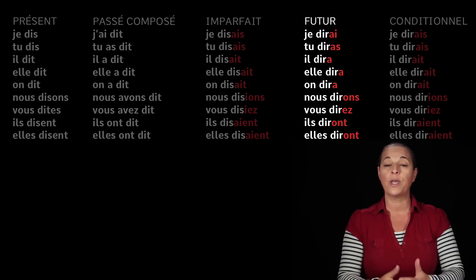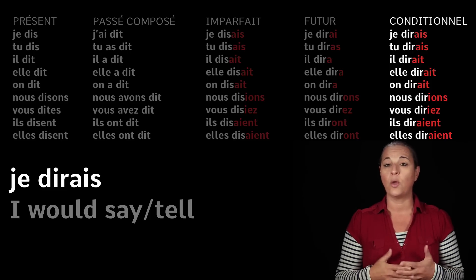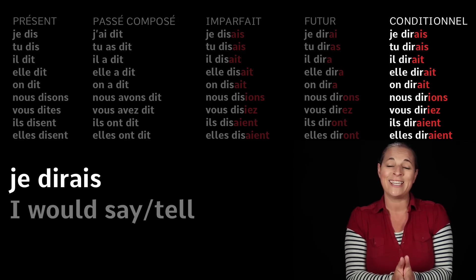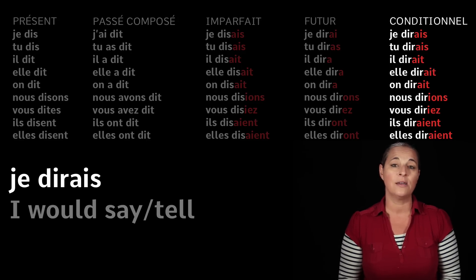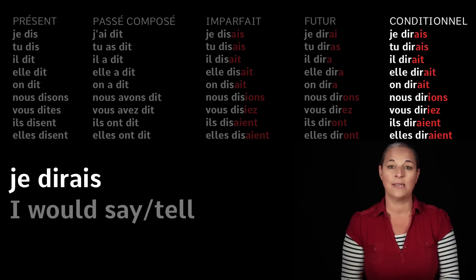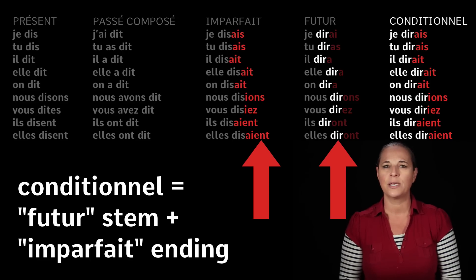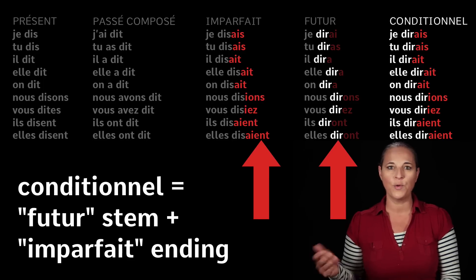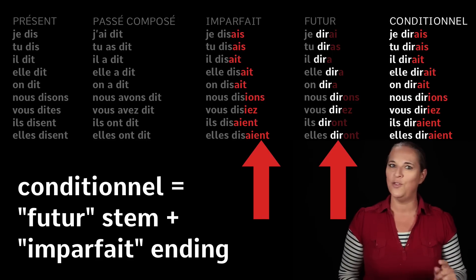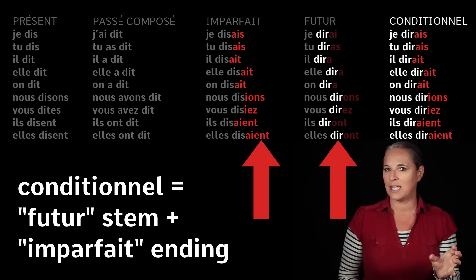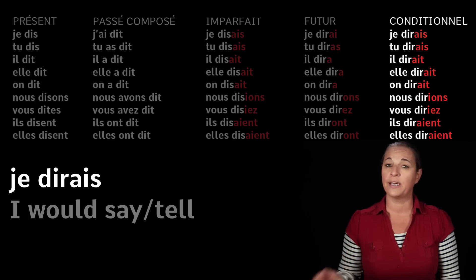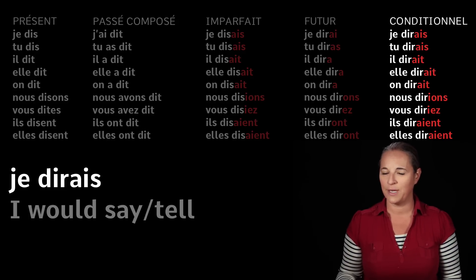Now let's have a look at the conditional. We are going to learn how to say 'I would say'. Remember we don't have 'will', 'would', 'could', or 'should'. You need to know the endings of this tense — they are exactly the same as the imperfect endings. But you use the stem of the future tense, not the imperfect. So we are not using D-I-Z as the stem — we are using D-I-R. So 'I would say' is je dirais, which sounds similar to the future tense but has an S.